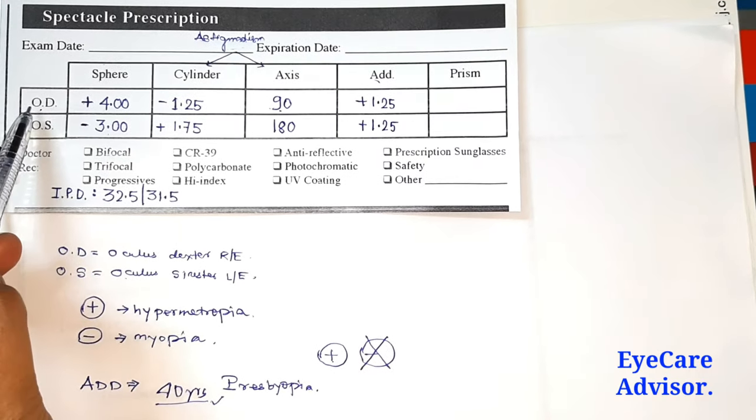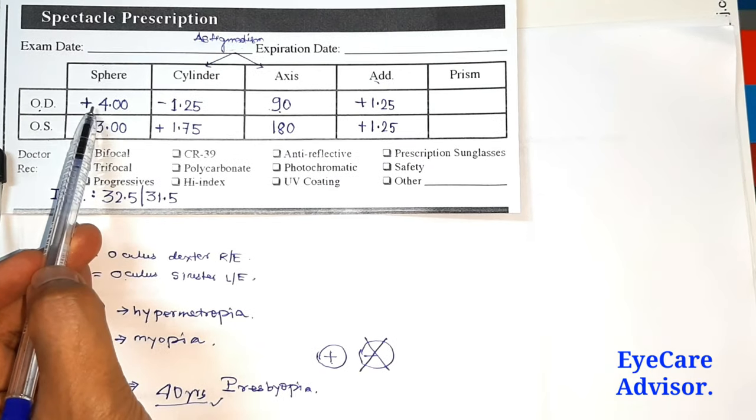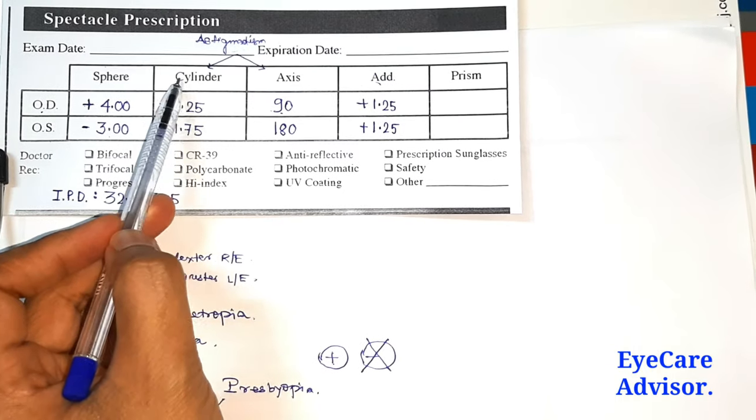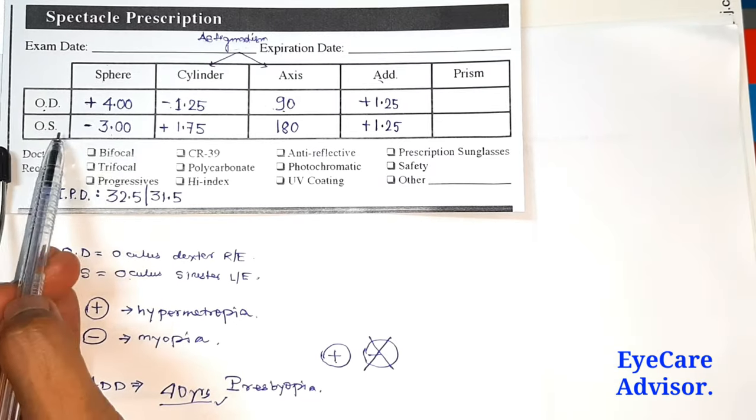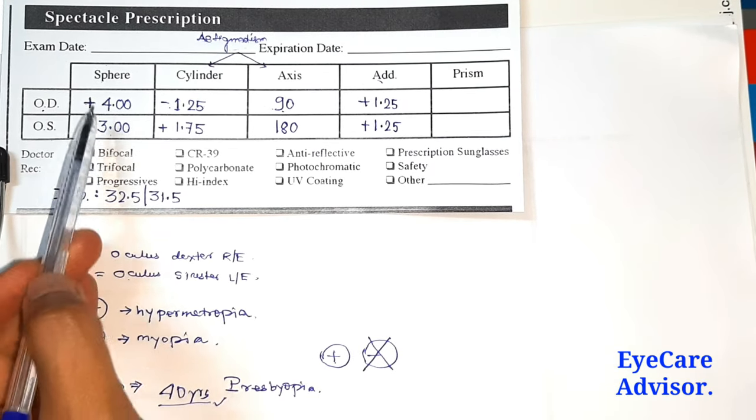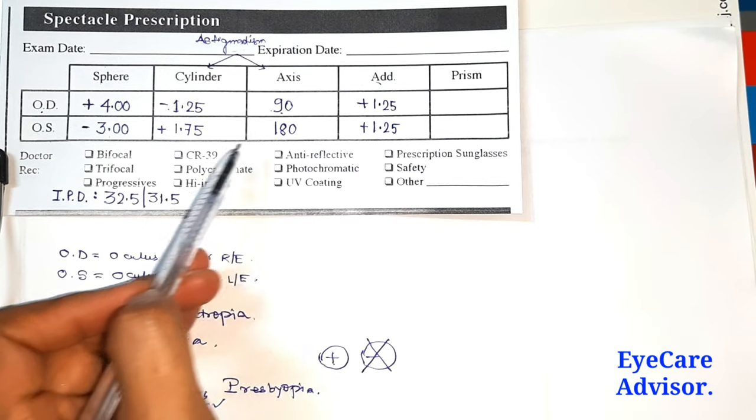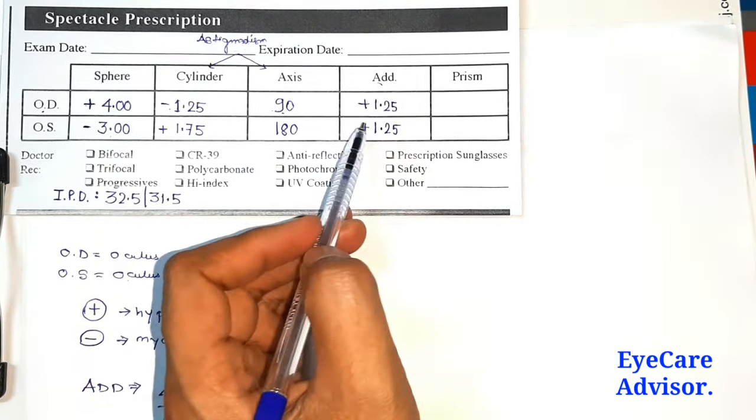Just to wrap up, I will say once more: OD means oculus dexter, which is the right eye. Then the first column, this is the power, plus 4 spherical power, then comes 1.25 cylindrical power with 90 degree axis. For the left eye, it is minus 3 spherical power with plus 1.75 cylindrical power with 180 degree axis, and the addition for this customer is plus 1.25.